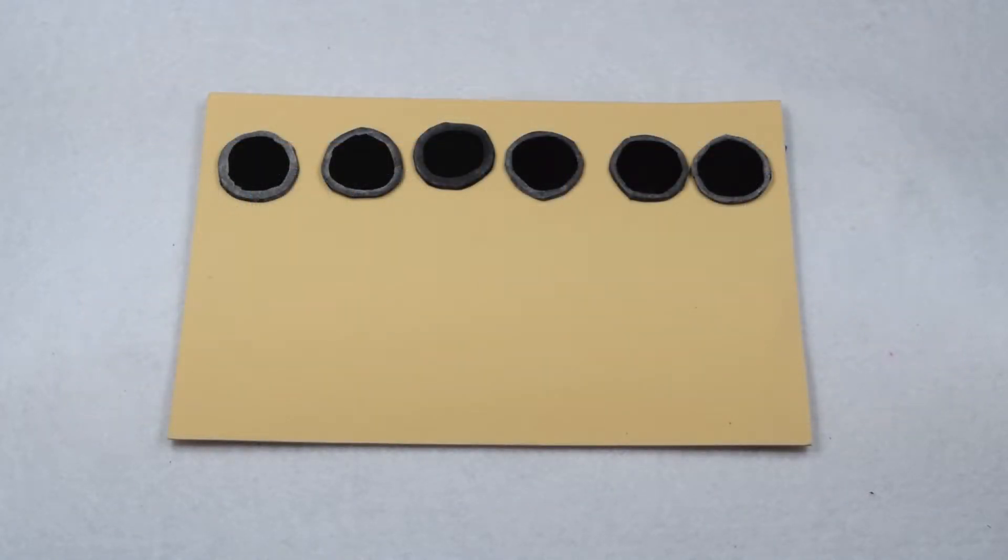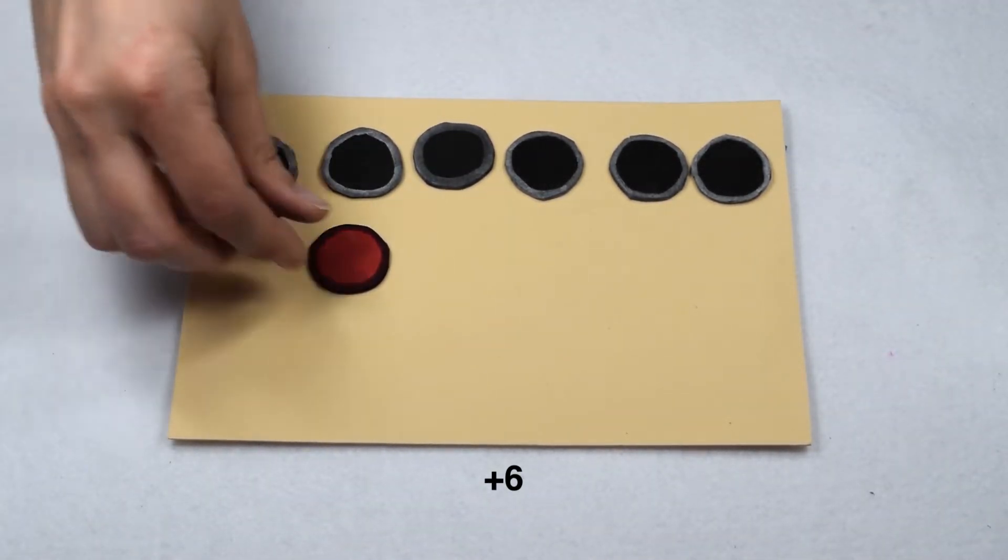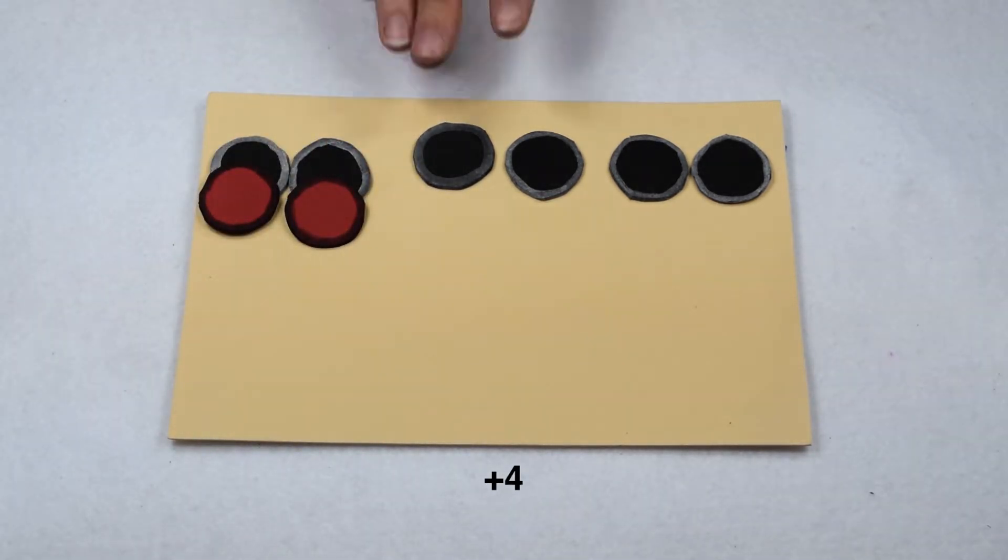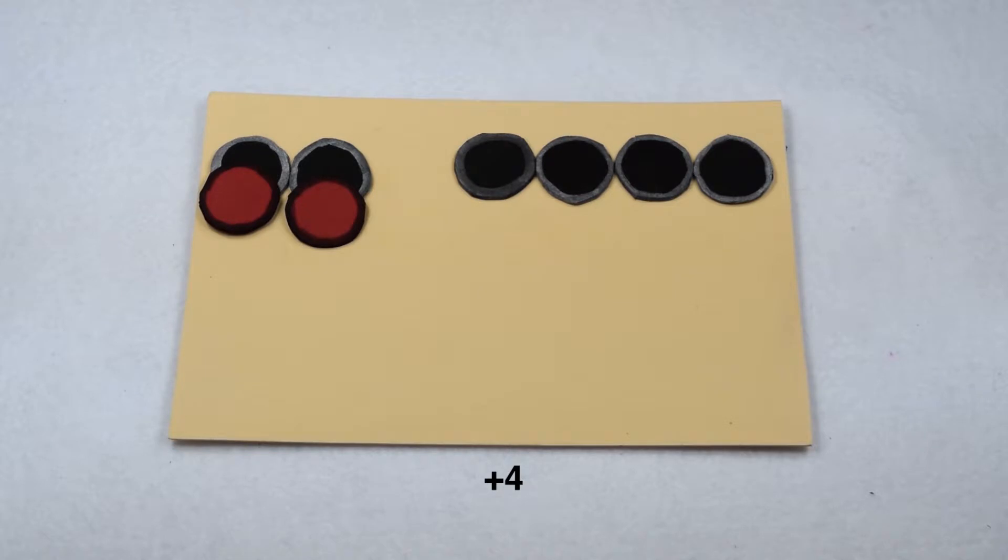We can also change a board's value by creating 0 pairs. Here we're starting with a value of positive 6, but we want our board to show a value of positive 4. To do that, I can add 2 negative chips to the board. By adding those 2 negative chips, I create 2 0 pairs with 2 of my positive chips, giving them a combined value of 0. So it's only my 4 positive chips that are left to represent a value of positive 4.